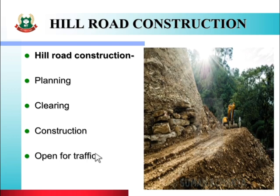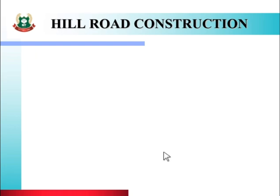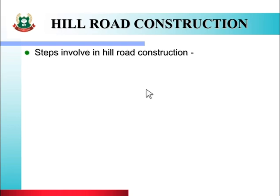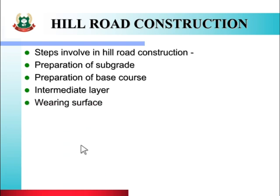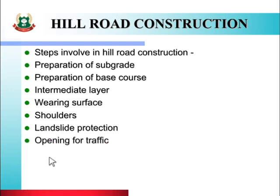Here is a picture of hill road construction work in progress. The step-by-step process of hill road construction is as follows — steps involved in hill road construction: preparation of subgrade, preparation of base course, intermediate layer, bearing surface, shoulders, landslide protection, and opening for traffic. These are the various steps used in hill road construction.